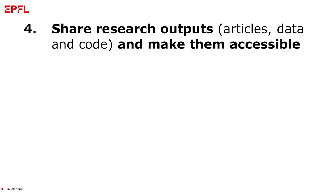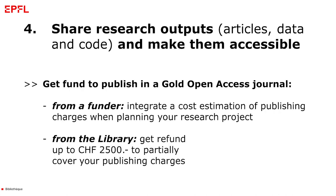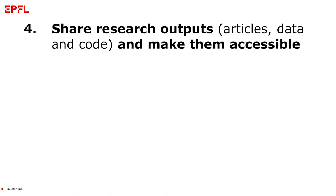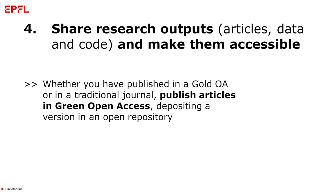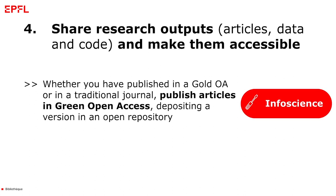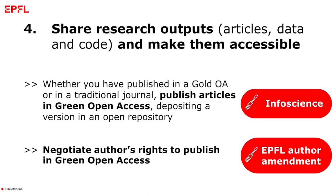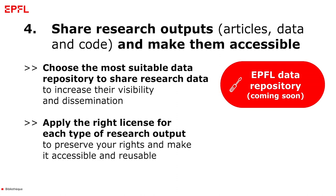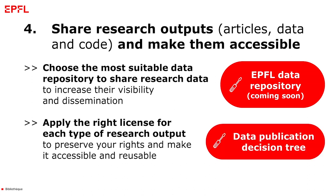Step 4: Share research outputs and make them accessible. Get funds to publish in a gold open access journal with the dedicated EPFL library fund. Publish your articles in Green Open Access by depositing a version in InfoScience, the EPFL institutional repository. Use the author amendment to negotiate your rights to publishing Green Open Access. Choose the most suitable repository to share your research data, and for each research output, apply the right license using the publication decision tree for data.